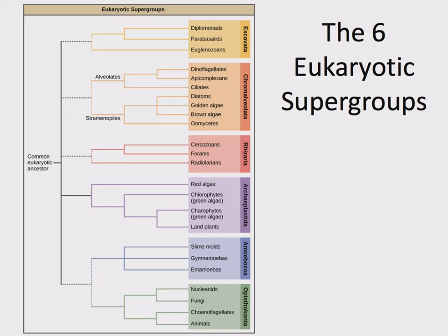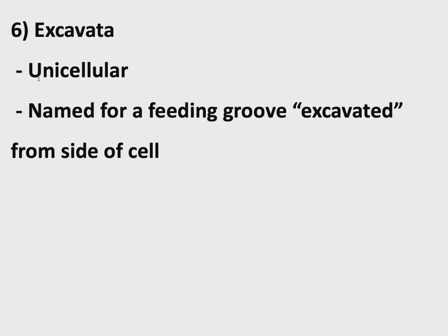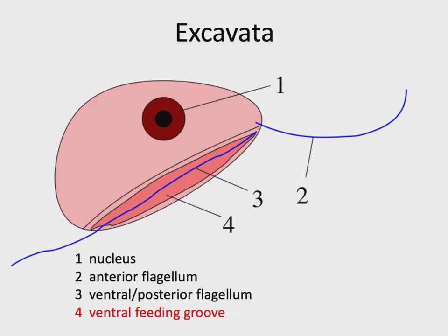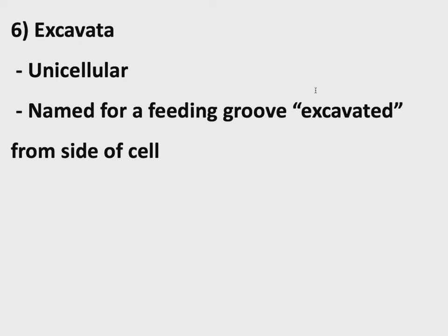One last group — almost finished. This is the supergroup called Excavata. Kind of a weird name, Excavata. These are single-celled organisms named for a feeding groove present on their cells that someone thought looked like it had been excavated from the side. Here's a cartoon showing the nucleus, the flagellum, and the feeding groove. Someone thought it looked like it had been excavated from the side of the cell, hence the name Excavata — something to help you remember the name.